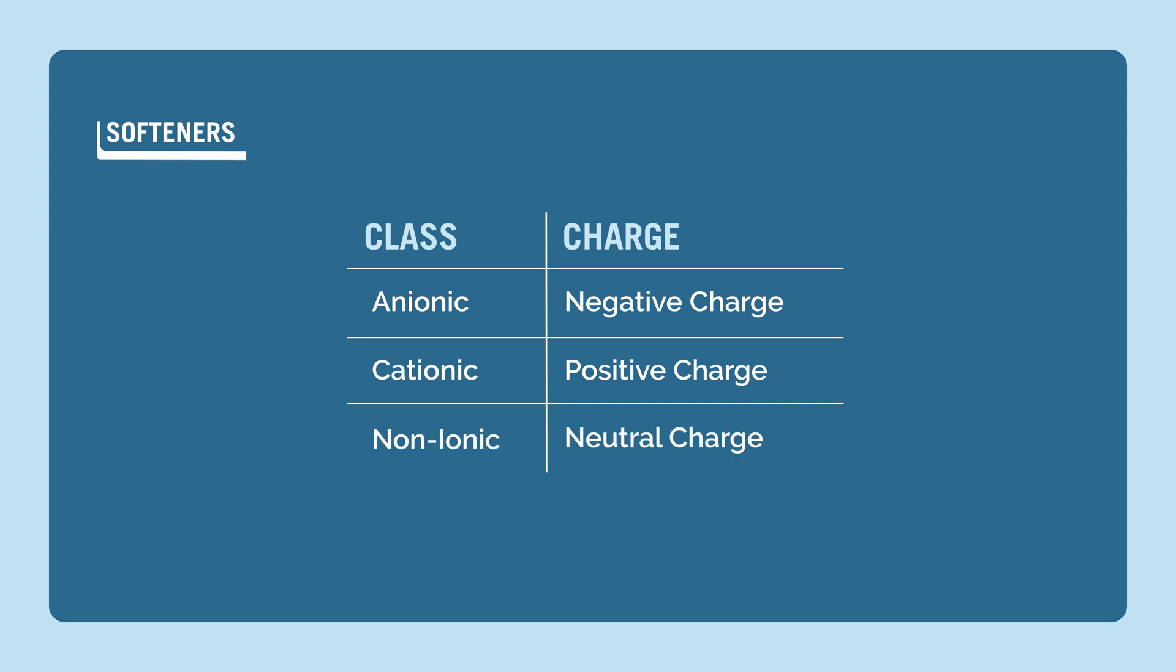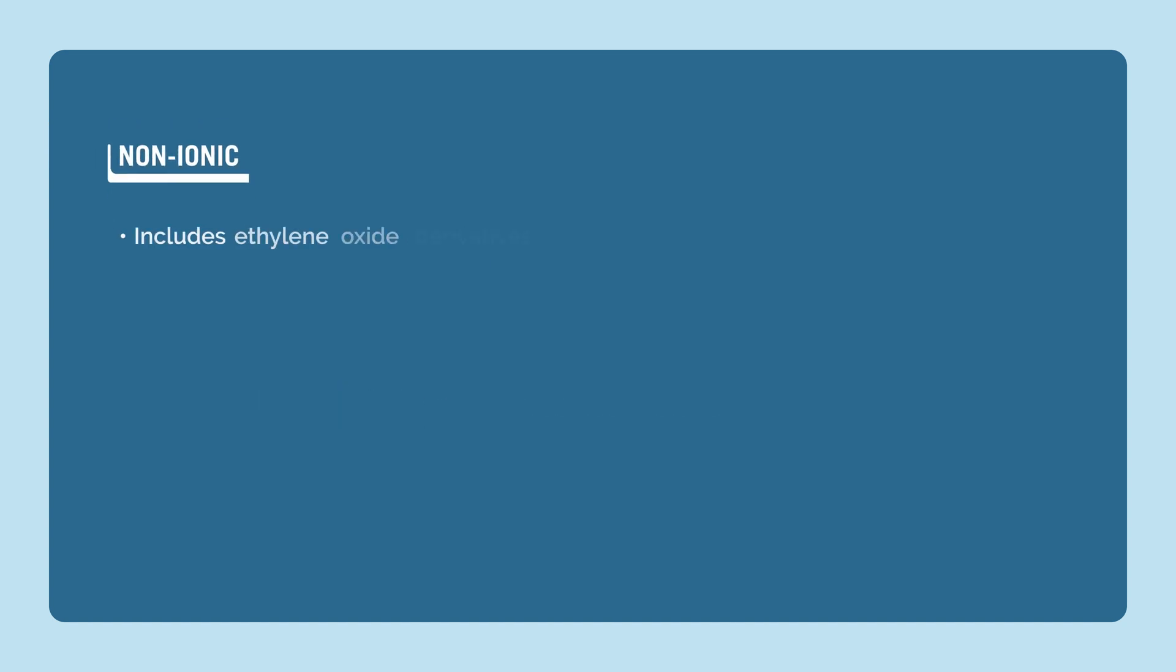A third type of softener is non-ionics, which have a neutral charge. This includes ethylene oxide derivatives, silicones, and polyethylene.